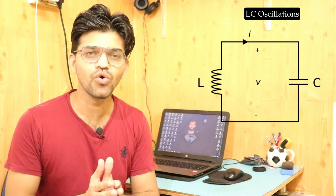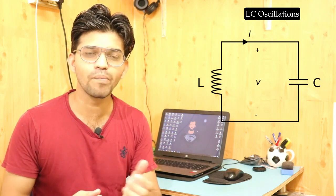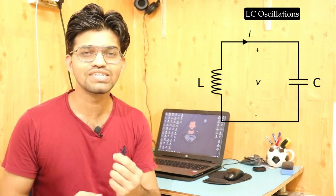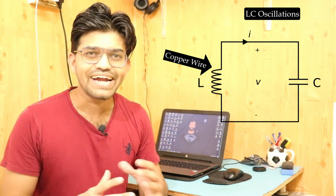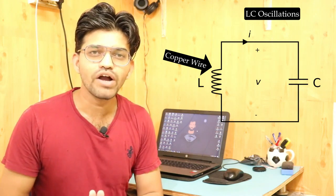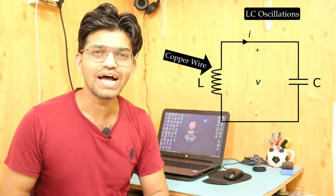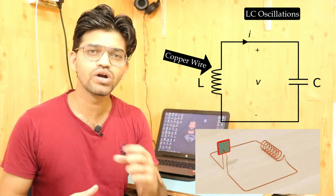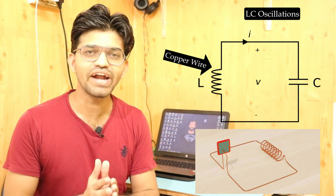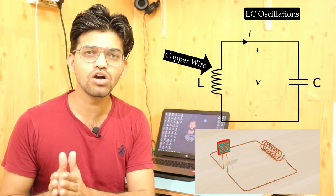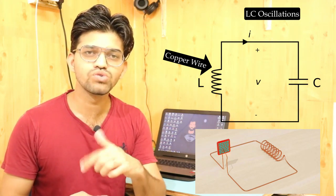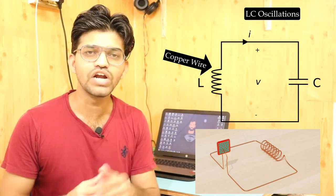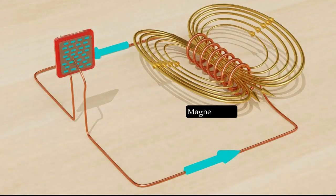In the case of LC oscillations, suppose you have a copper wire with L number of turns — we call that an inductor. If you connect a battery to that copper wire, when current flows through those turns, it will produce magnetic flux.